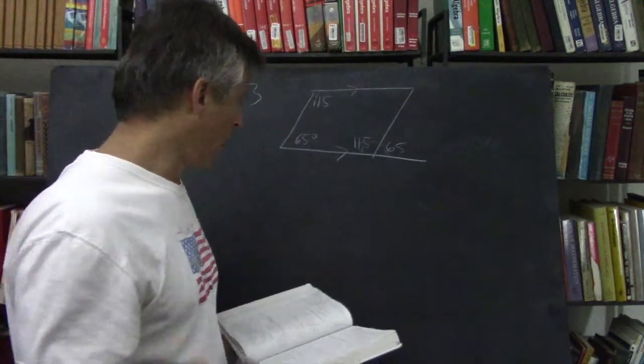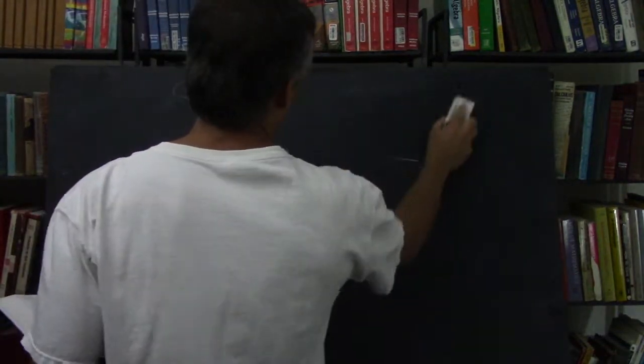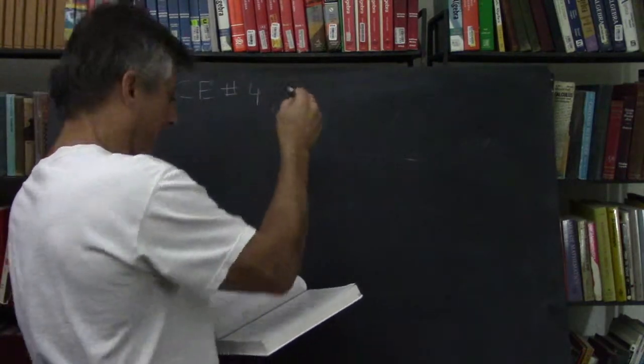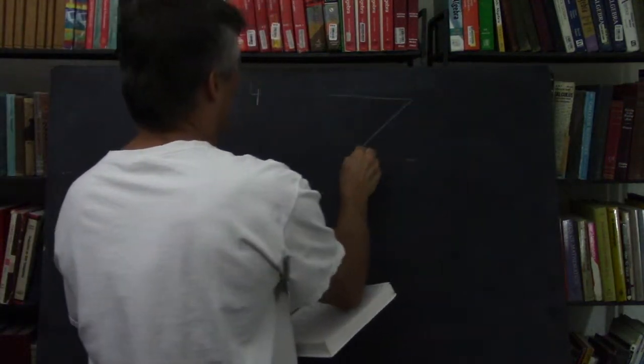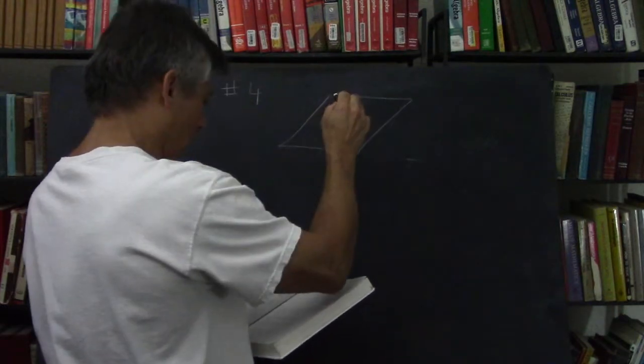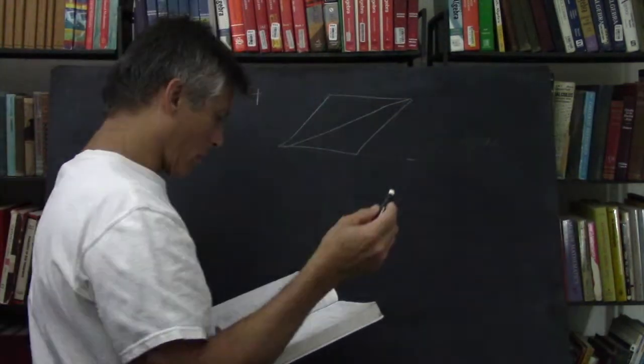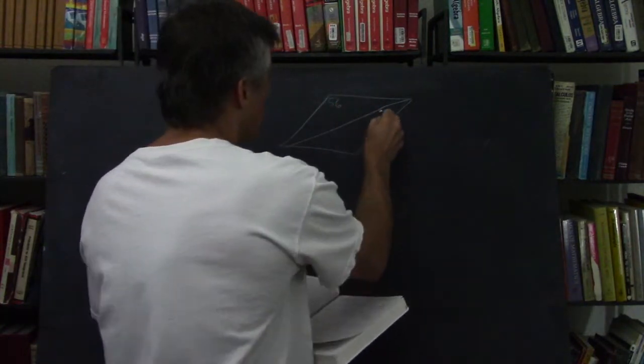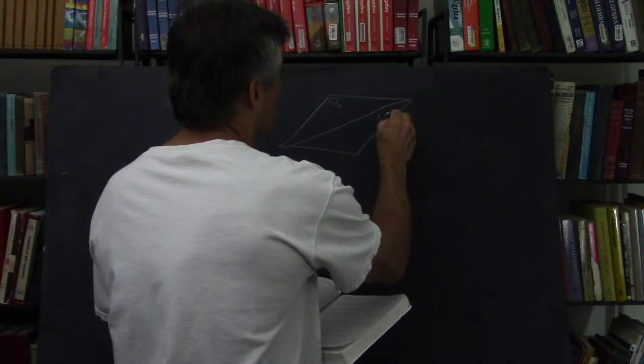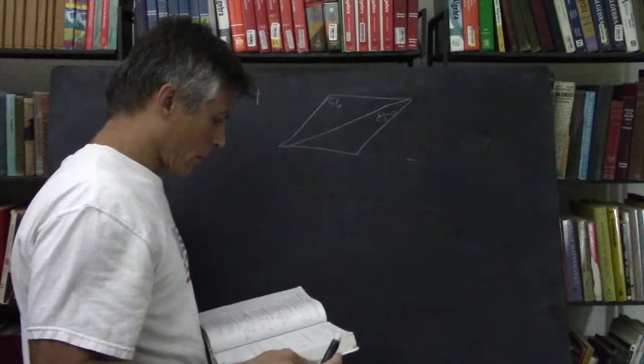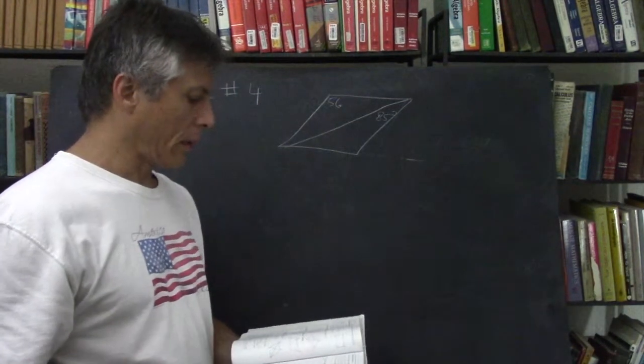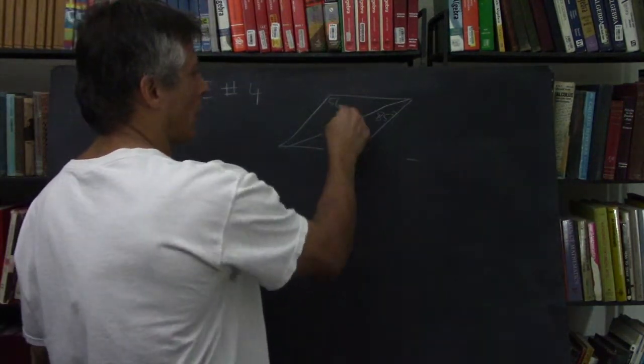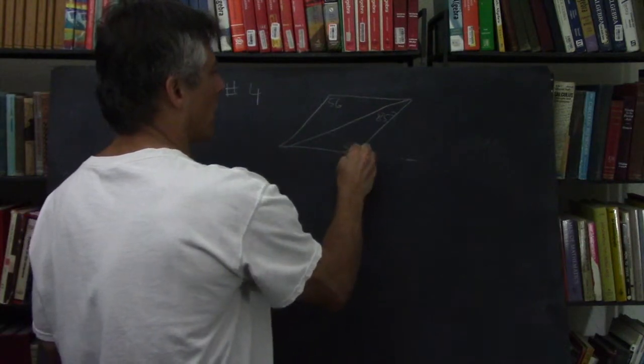Now let's try number 4. So number 4. Okay, so we've got to find x, y, and z. Now some of this is easy because opposite angles are congruent. So that's 56.